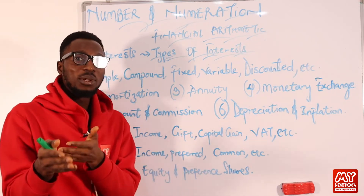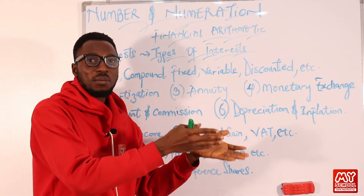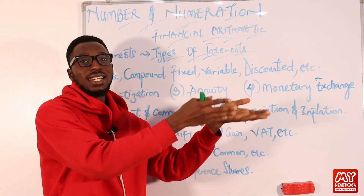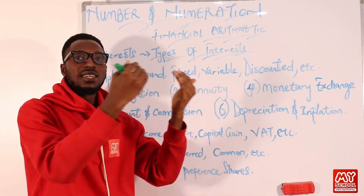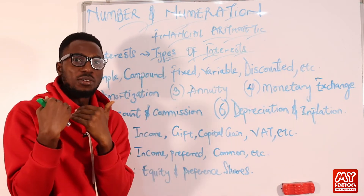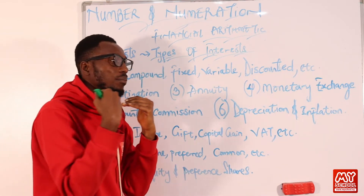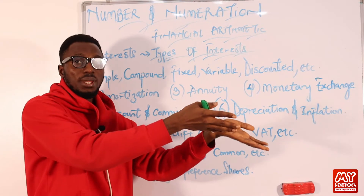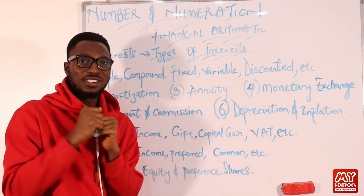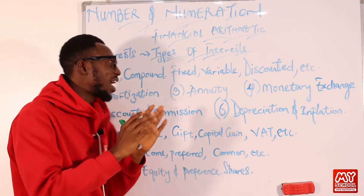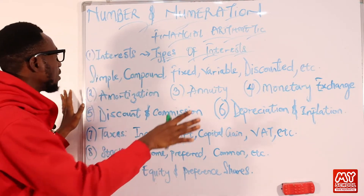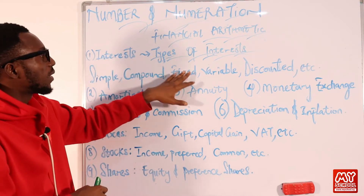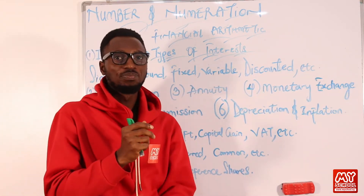Or if you borrowed 50k from a lender — let's say Lender B — the compensation for borrowing that money from Lender B is what you call interest. We have different types of interest: it could be simple, compound, fixed, variable, discounted, or even prime.